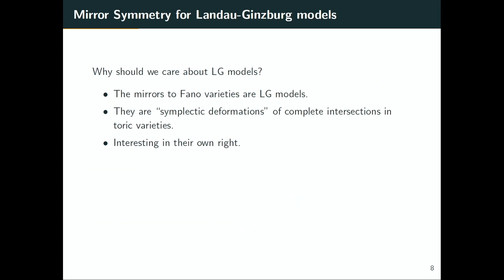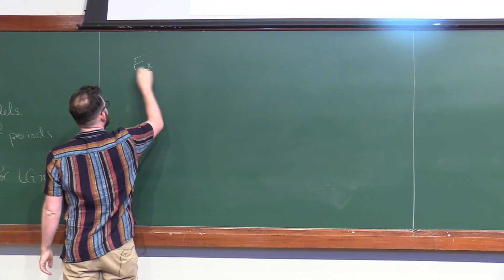Now that I've described what a Landau-Ginzburg model is, maybe I should tell you why these are natural. I mentioned before that we've expanded mirror symmetry past Calabi-Yau varieties. When we expanded to Fano manifolds like P2 and understood mirror symmetry for P2, its mirror is not naturally a Calabi-Yau anymore — it turns out to be a Landau-Ginzburg model. So Landau-Ginzburg models naturally showed up in mirror symmetry as mirrors. But also they show up as deformations of complete linear sections in toric varieties. Let me give an example: I'm going to take Z(F) inside P4 where this is just going to be a quintic polynomial — this is inside the sections of P4, O(5), a degree 5 polynomial.